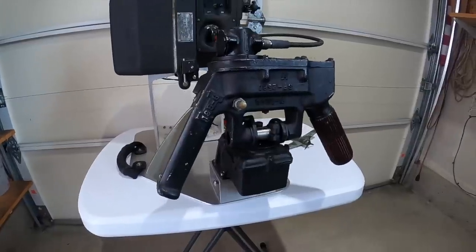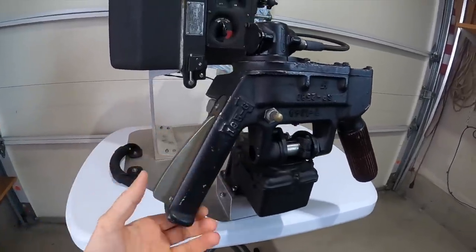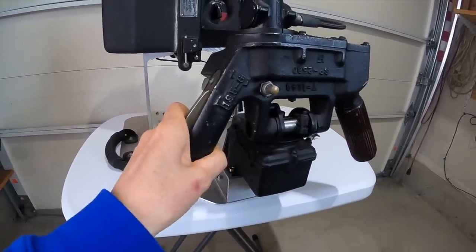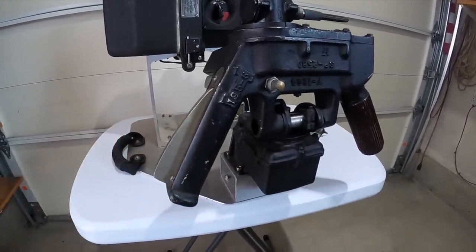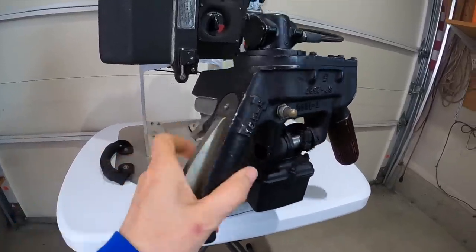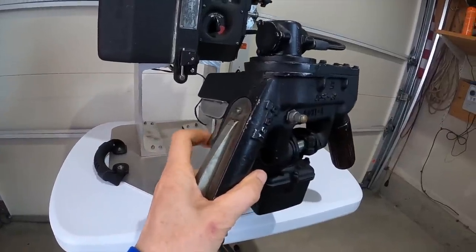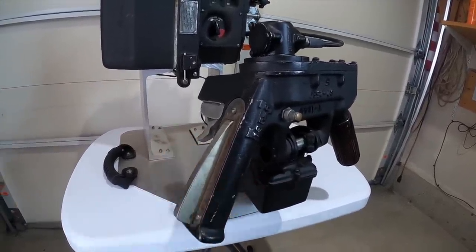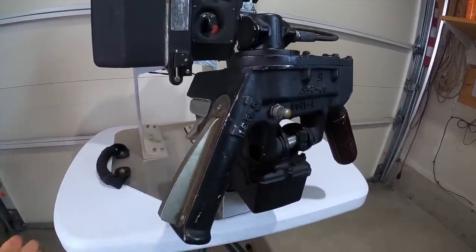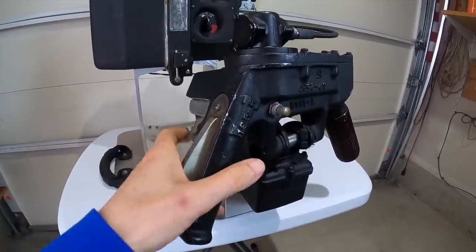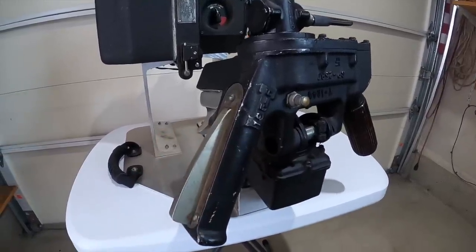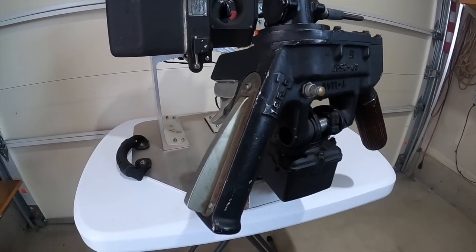On the left hand handle, we have the dead man lever and that's spring loaded. If the gunner releases this lever, then that breaks the electrical circuit and the turret will stop rotating. We also have a trigger which sends electrical signal to the solenoid of the Browning machine gun. We have a trigger on the other side. Either trigger works both barrels. Either trigger will fire both barrels simultaneously.